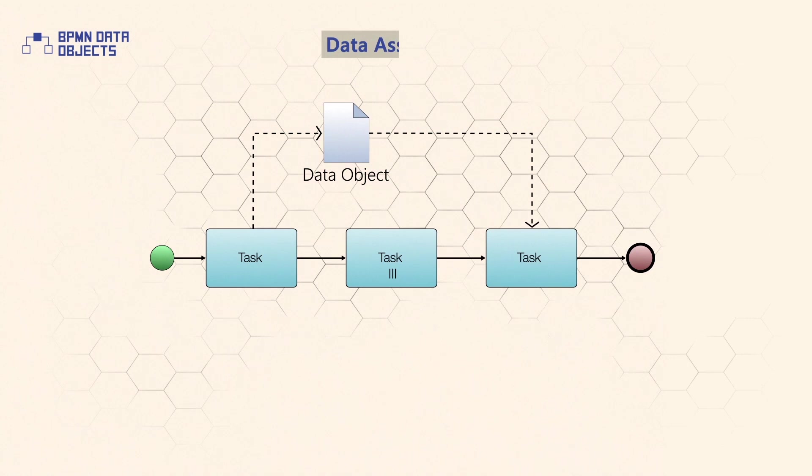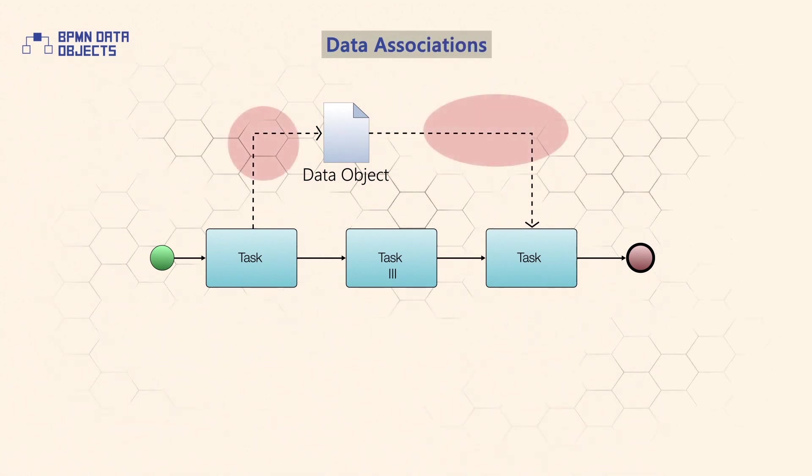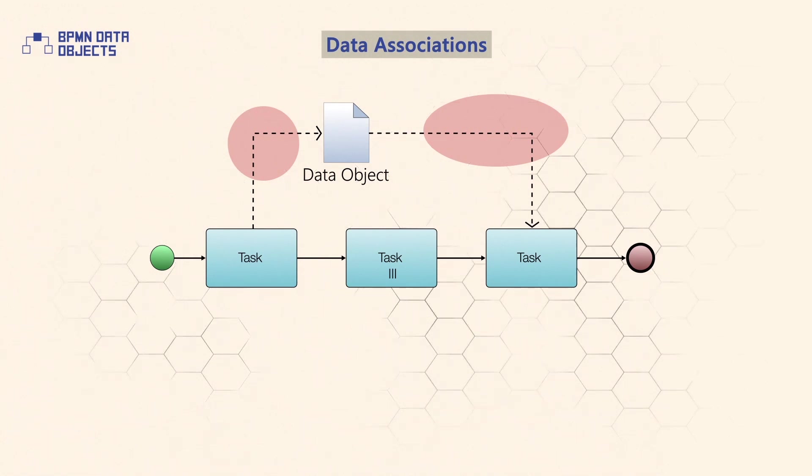The transformation or transportation of a data object between flow elements is modelled with data associations. It's important to stress that data associations have no direct effect on the flow of the process.